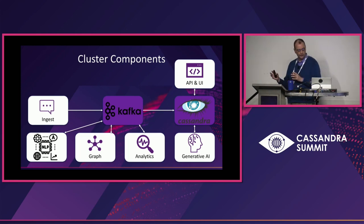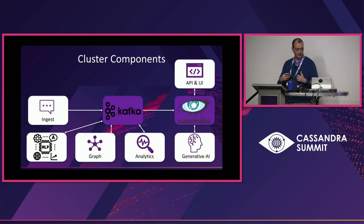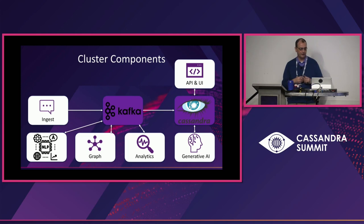With Cassandra 5.0 coming out, we're working on vectorizing data — using vectors to prep for generative AI and other LLMs.